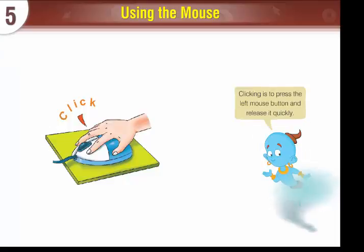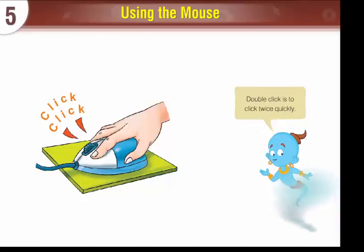Click. Clicking is to press the left mouse button and release it quickly. Double click. Double click is to click twice, quickly.